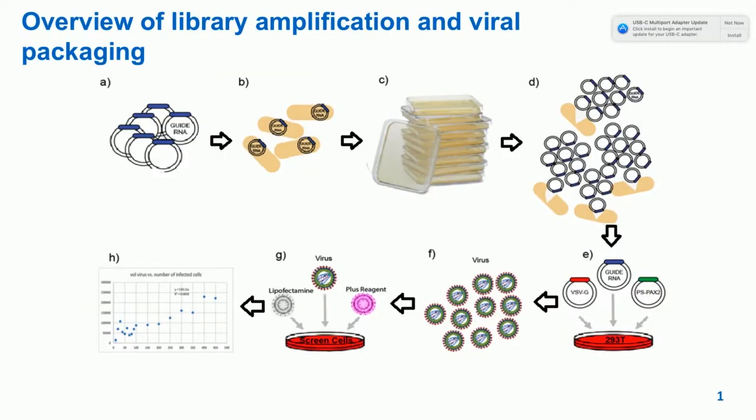The first thing you do is you get your library. It's going to be synthesized, so you're not going to have a lot of it — definitely not enough to screen. So the first thing we're going to do is transform it into bacteria. The bacteria will amplify it. We will grow the bacteria in solid phase, and we'll talk about why later. We will then harvest all of our library. At this point it's really a good idea to sequence your library to make sure that you haven't lost any representation of your guides between getting it from your synthesis aliquot to your amplified sample.